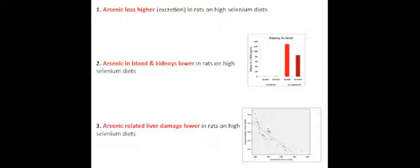The first one was that arsenic loss was higher through urine and feces in animals on the high selenium diets. Number two, arsenic was lower in the blood and kidneys. And number three, arsenic-related liver damage was lower in rats on high selenium lentils.